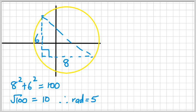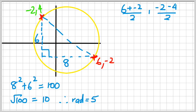To work out the center of this circle, we need to find the midpoint of these two coordinates. So I've written down (-2,4) and (6,-2). The midpoint is (6-2)/2 for the x-coordinate, and (-2+4)/2 for the y-coordinate. That's 4/2, which is 2, and 2/2, which is 1. So the center is (2,1).